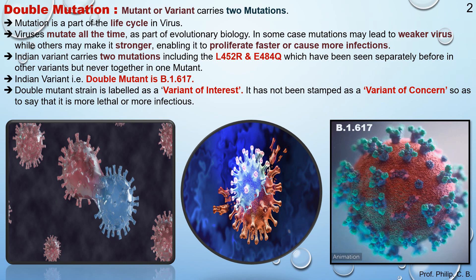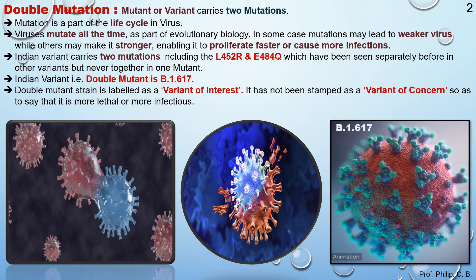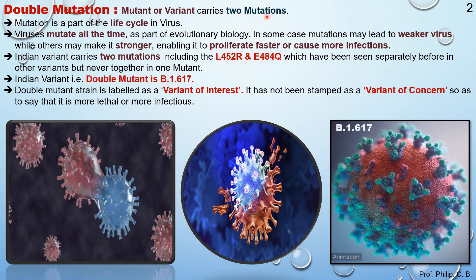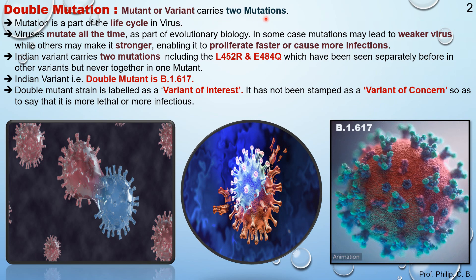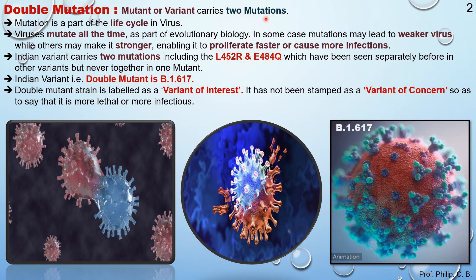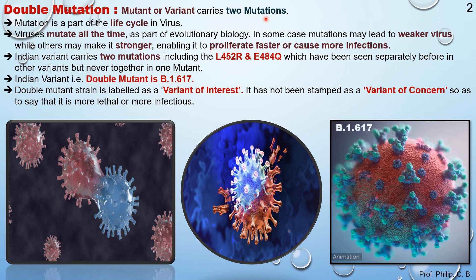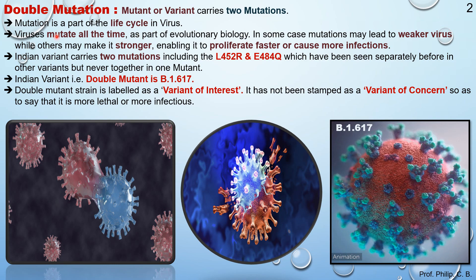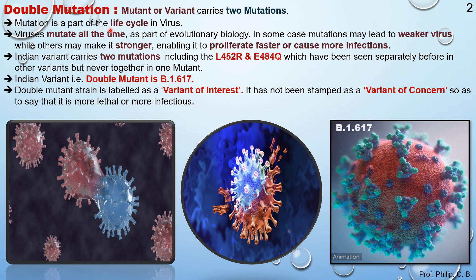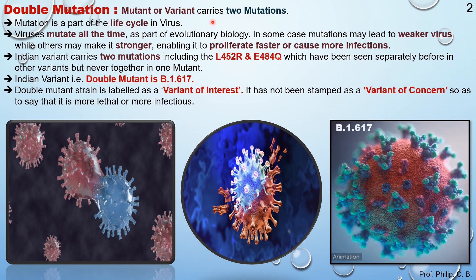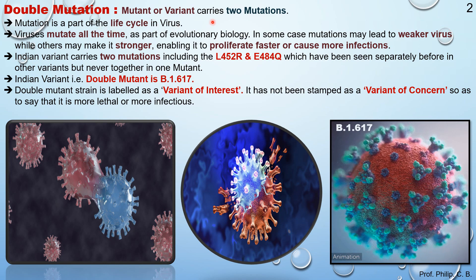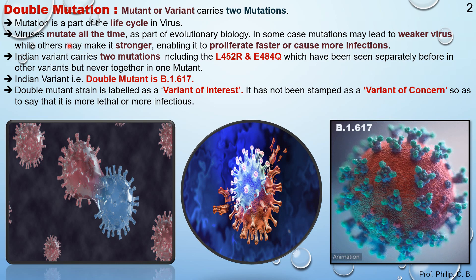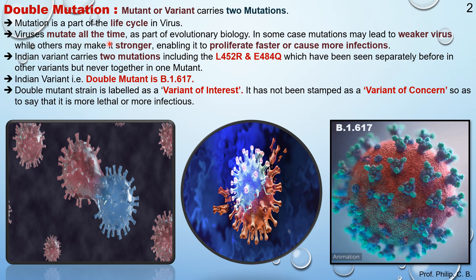Now let's learn in a little more detail about double mutation. A mutant or variant carries two mutations — that is, two different mutant strains or variants which mutate to form two mutations. Mutation is a part of the life cycle of a virus, meaning the virus always keeps on mutating.